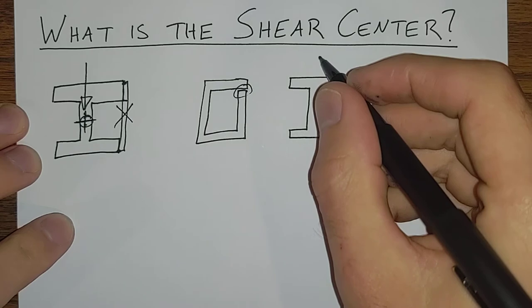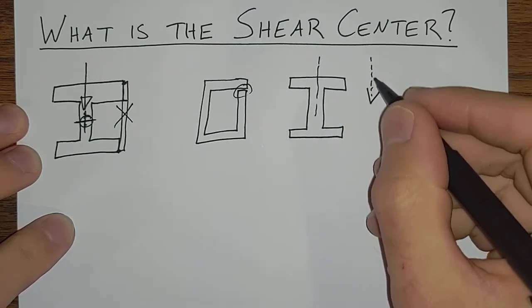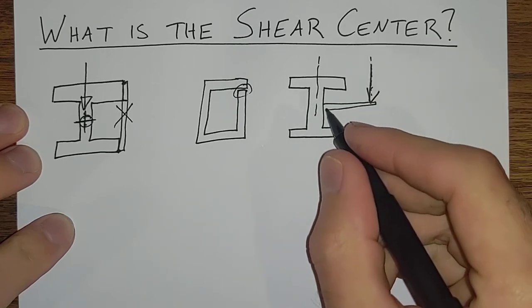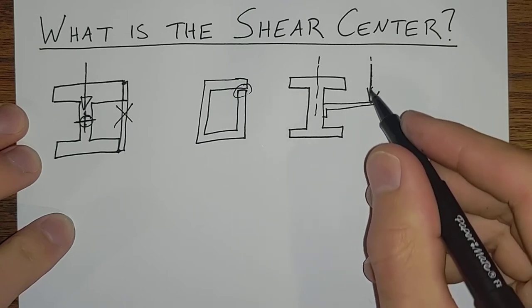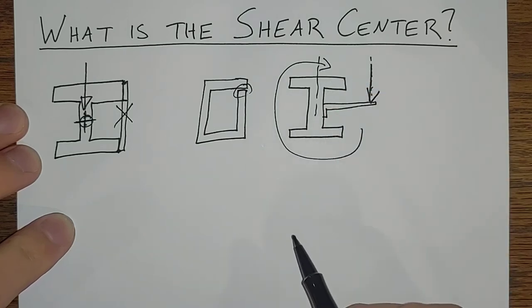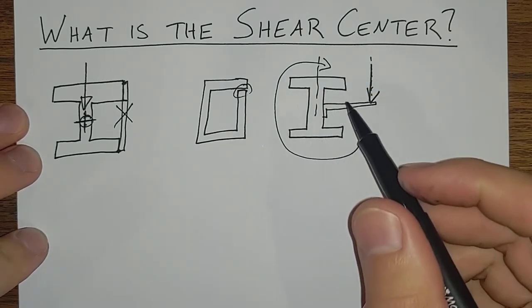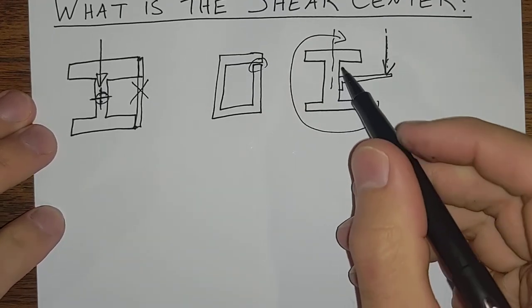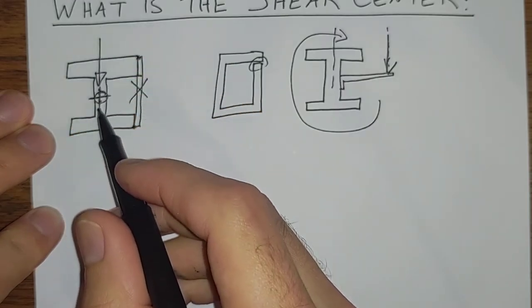And we impose our loads way out here, some form of a kicker coming off of there. We're getting not just the direct shear, but we're imparting a twist on that beam. We don't want to impart a twist on the beam. So when it comes to symmetrical shapes, we need to make sure that that load comes down through the center.